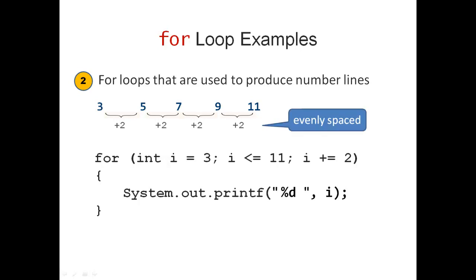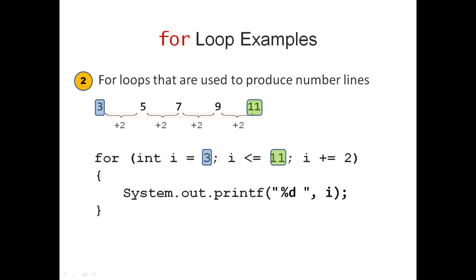All of the numbers in the number line are evenly spaced. In such a situation, you can write a for loop by initializing the control variable with the first element of your number line. You keep going until you reach the last element, and you update by adding 2, which is the difference between two adjacent elements in your number line.